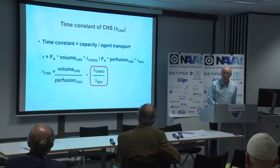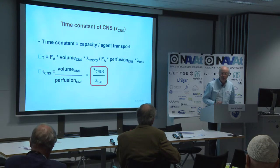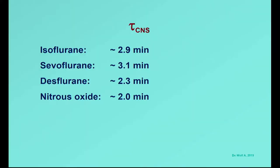Of course, in general, tissue solubility increases when blood solubility increases — that's a direct result of the chemistry of the molecule. But still, they're not always totally linear relationships. We have to look at this ratio when we calculate the time constant in the CNS. That's why, for example, the time constant of isoflurane is slightly shorter than the time constant of sevoflurane because of that ratio, even though we know the blood solubility of isoflurane is higher than that of sevoflurane.